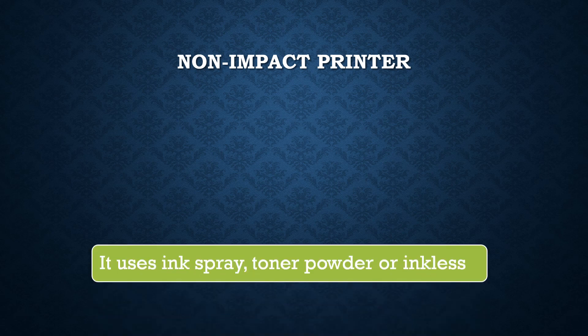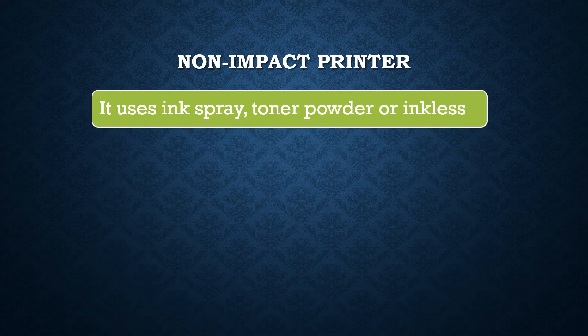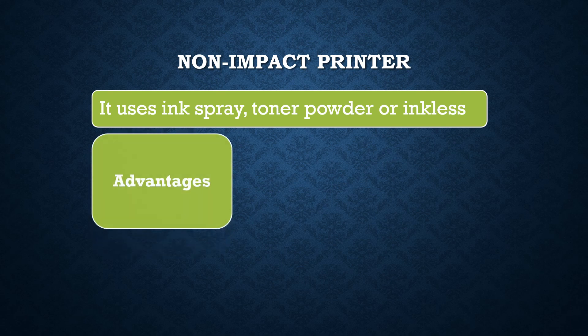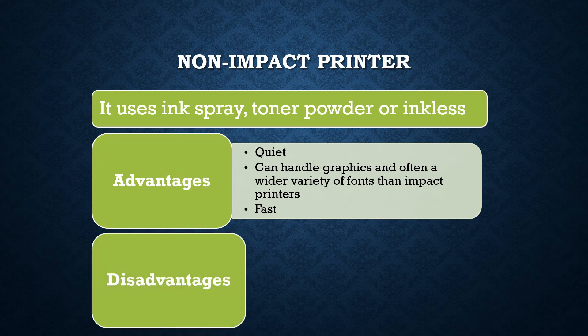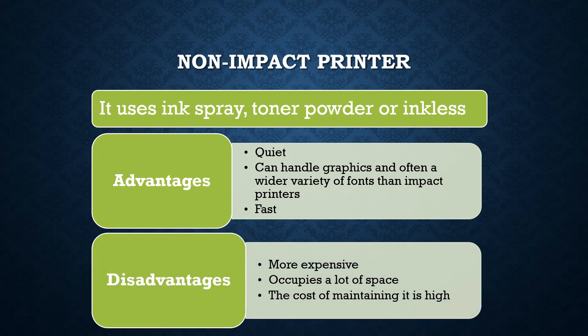Non-impact printers use ink spray, toner powder or are inkless. Advantages of non-impact printers are that they can handle graphics and often a wider variety of fonts than impact printers, and they are fast in speed. The disadvantages are that they are more expensive than impact printers, occupy a lot of space, and the cost of maintaining is also very high.